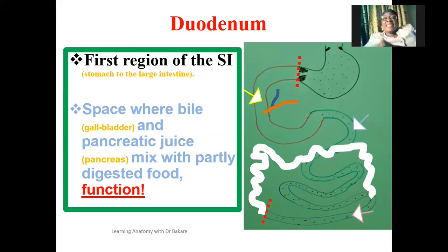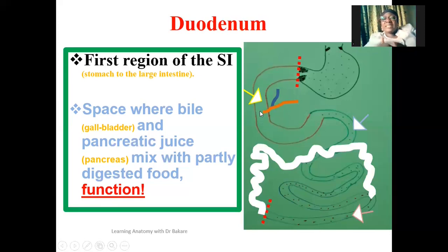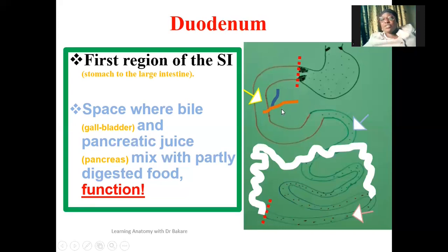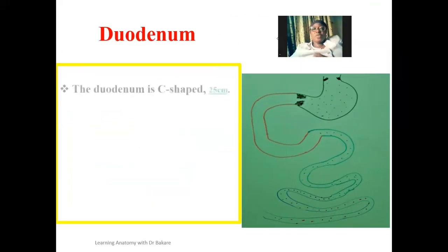The digestive system, apart from breaking down food substances, also allows nutrients to be taken up into the body. It is the pancreatic juice and the bile that help to further break down food substances to the smallest units that the body can absorb. The specific region of the small intestine where bile and pancreatic juice are released is the duodenum, and that can also be taken as a function of the duodenum.